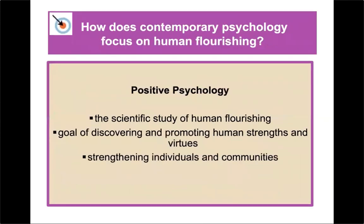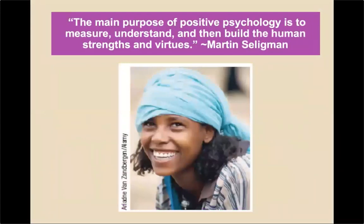How does contemporary psychology focus on human flourishing? With positive psychology — the scientific study of human flourishing — the goal is discovering and promoting human strengths and virtues and strengthening individuals and communities. At the University of California at Berkeley, the Greater Good Institute studies positive psychology extensively. The main purpose of positive psychology, as stated by Martin Seligman, a famous contemporary psychologist who has studied depression extensively, is to measure, understand, and build human strength and virtues.